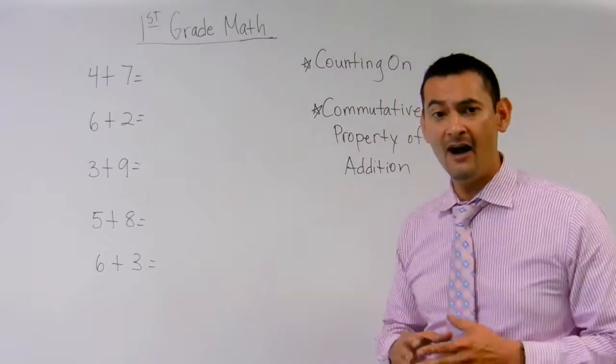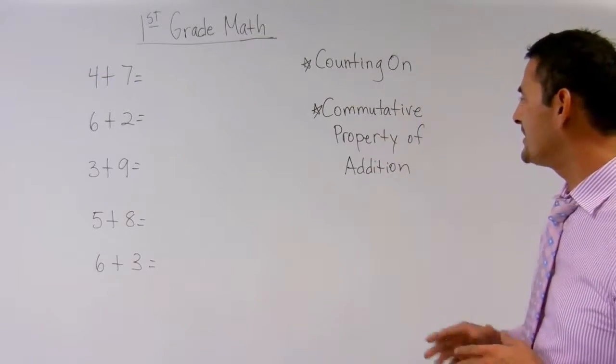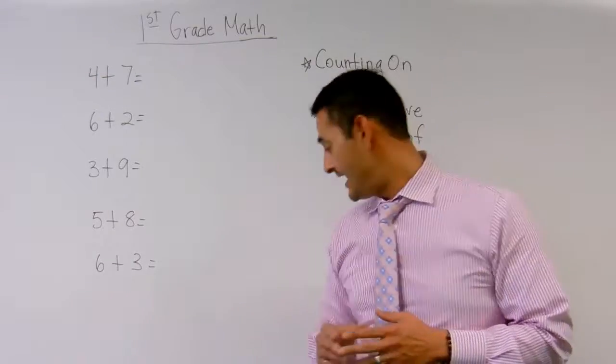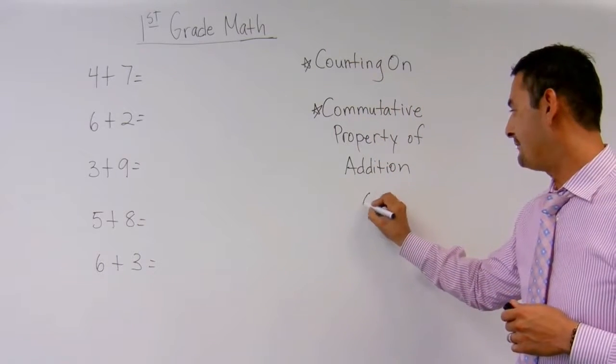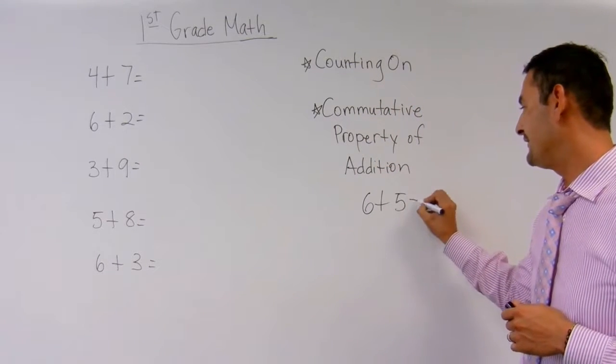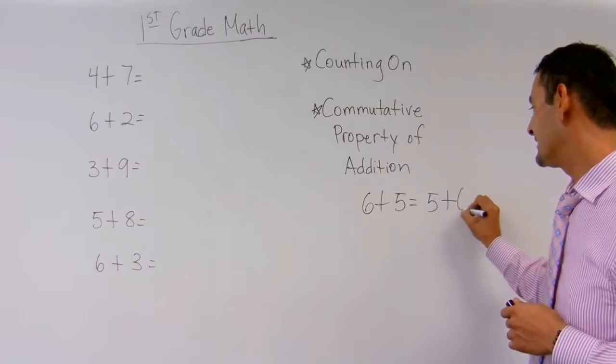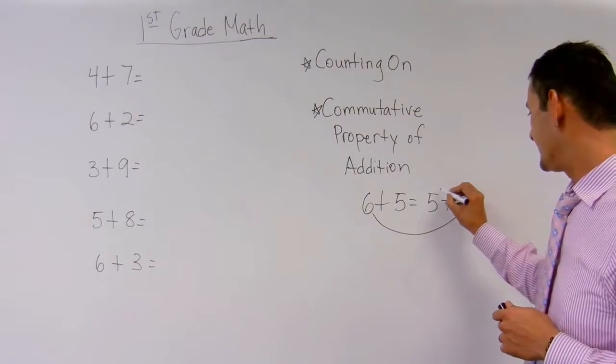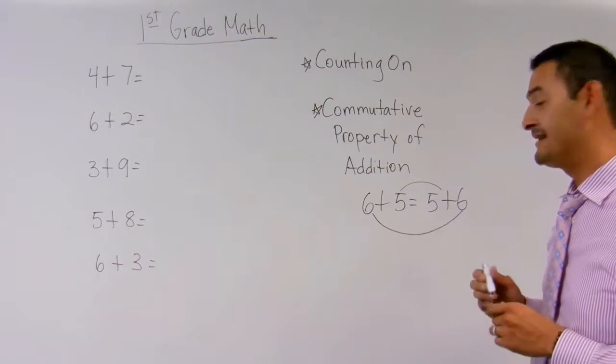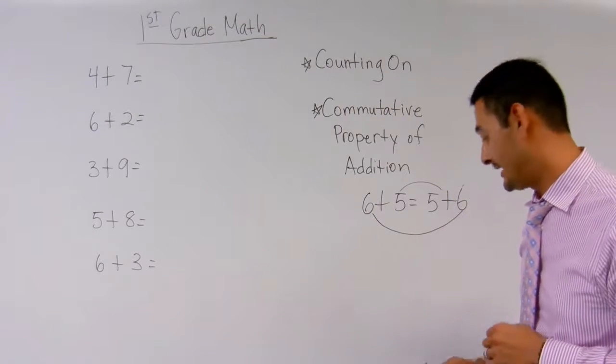And when we're counting on, we can definitely use the commutative property of addition. And earlier in a video, I showed you that, for example, 6 plus 5 equals 5 plus 6. All I do is I switch the numbers around, and it equals the same thing.